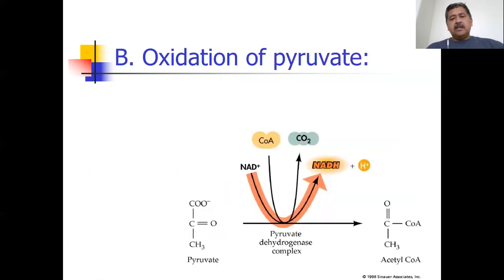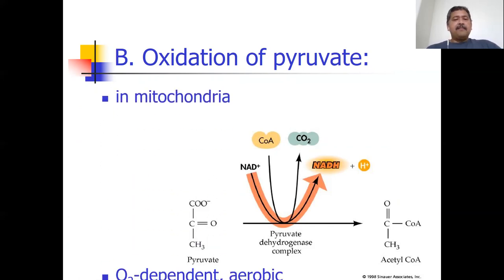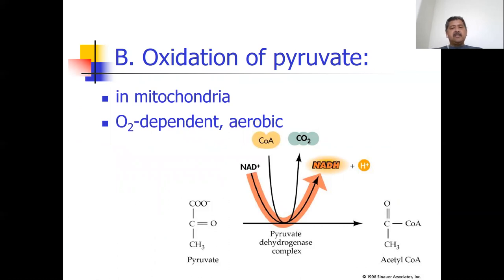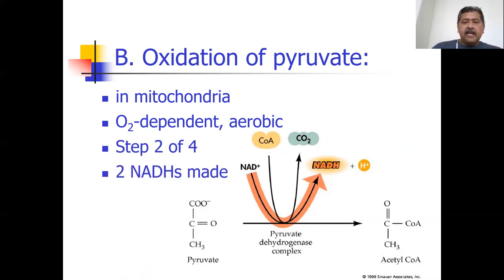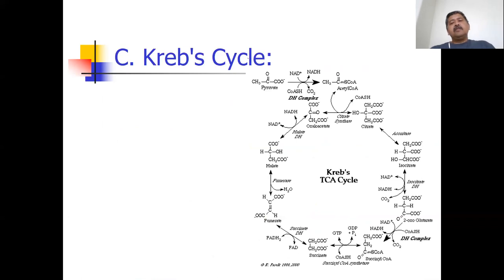In the oxidation of pyruvate, pyruvate is converted to acetyl coenzyme A — you lose a carbon dioxide, but you also make some NADH. These are high-energy electron acceptors, and for each one you get, you'll eventually get three ATPs.